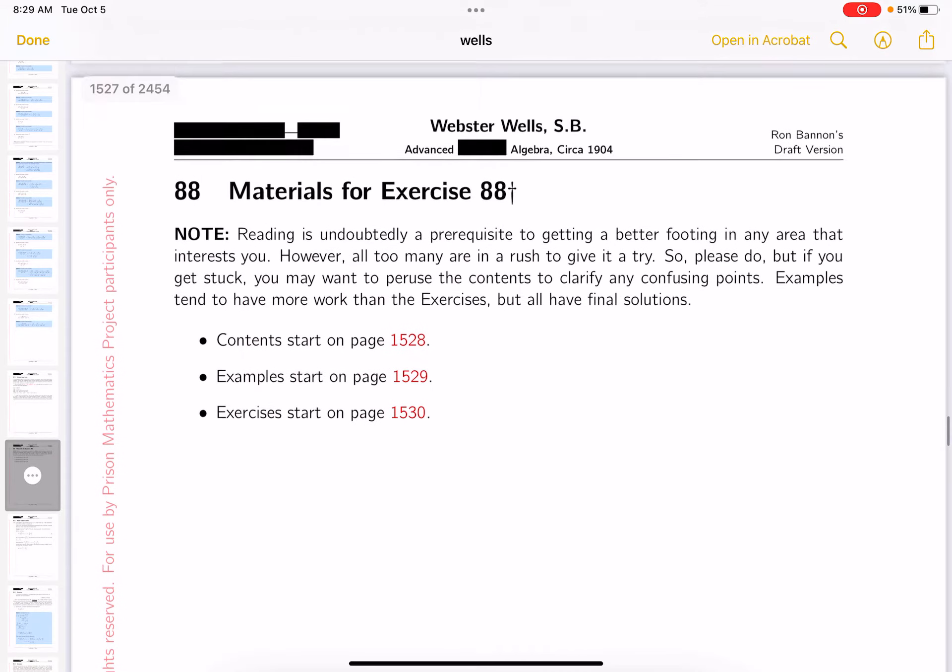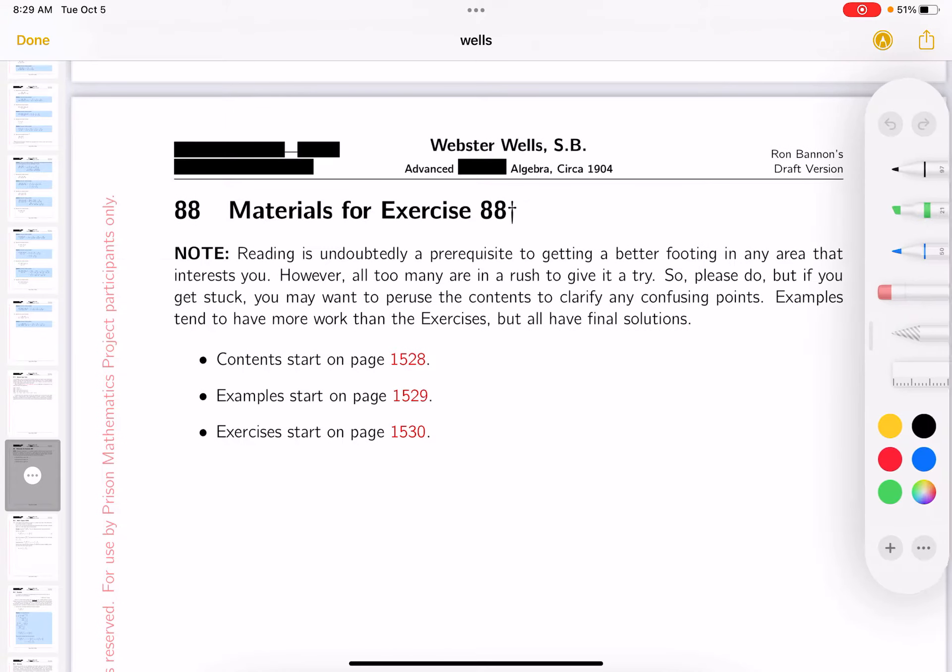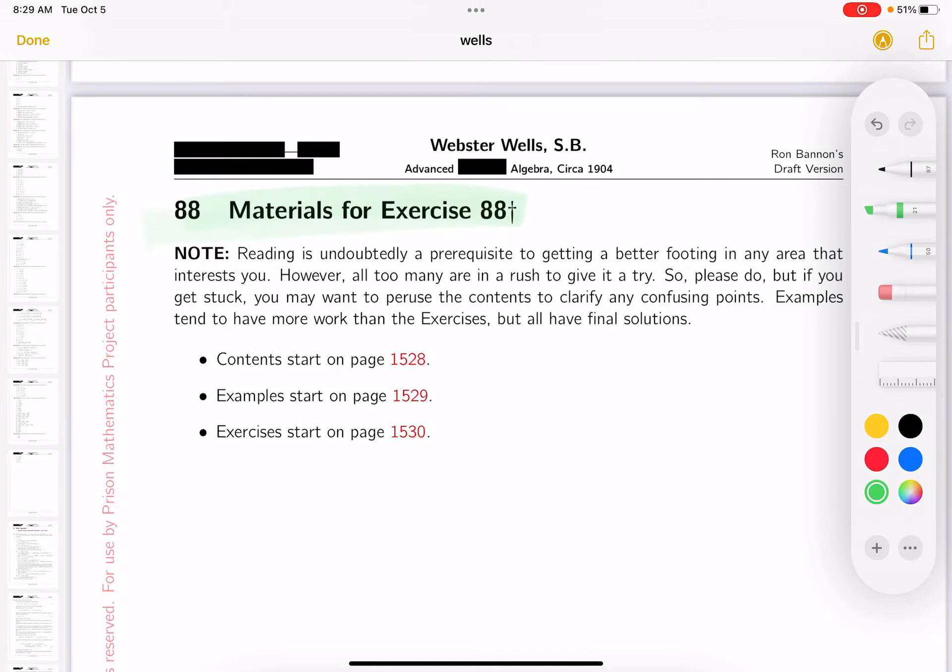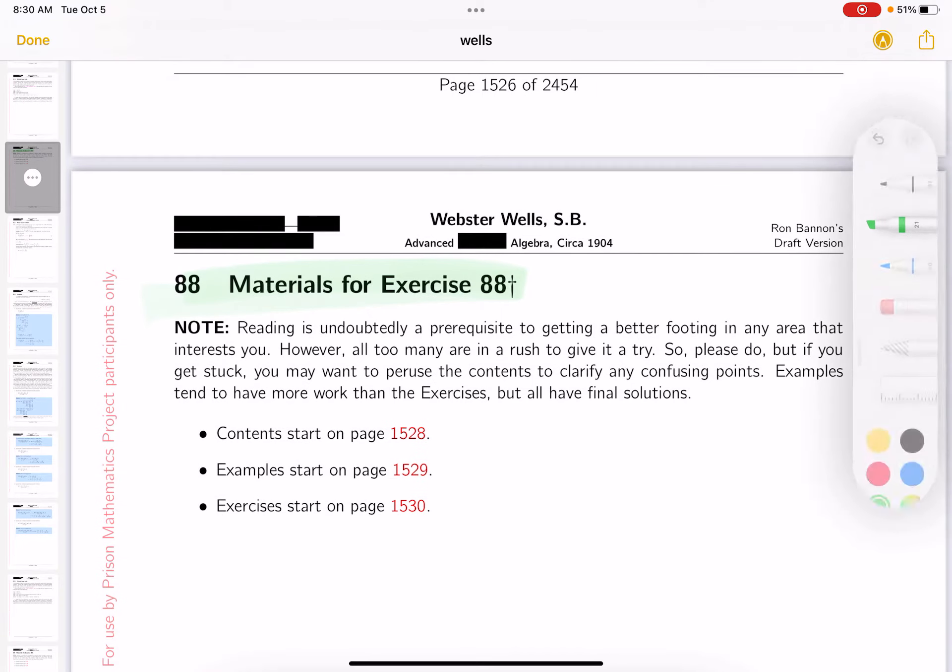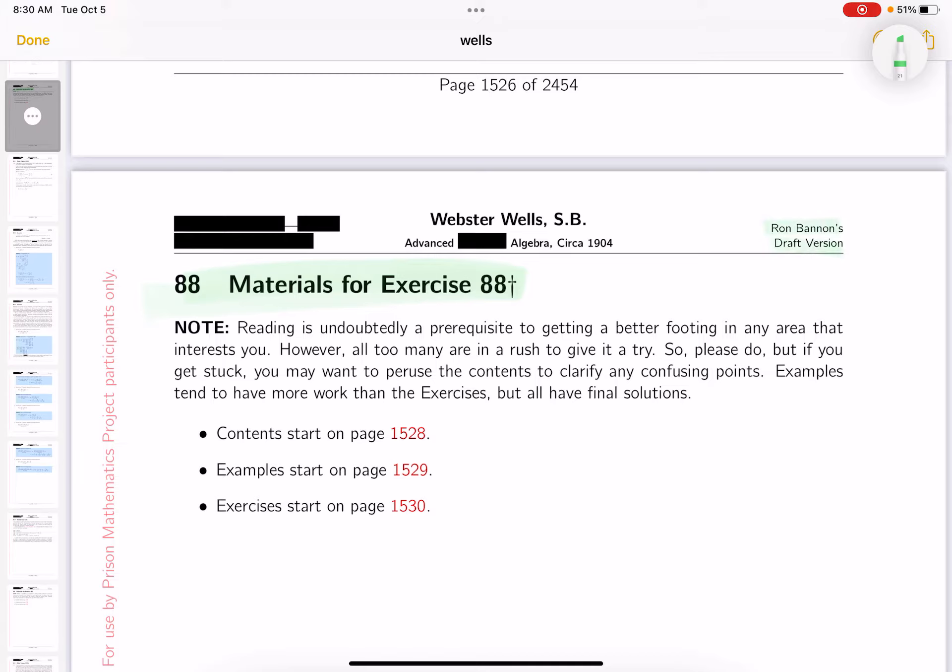We're almost at 88 now, so just click on the red link. It'll bring you directly there and let's discuss it. We're in section 88 now. What's this all about? This is 88. It's about my draft version, Ron Bannon of Webster-Wells Advanced Course in Algebra, and that dates back to 1904.